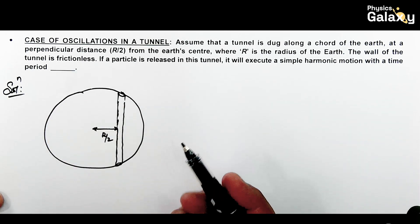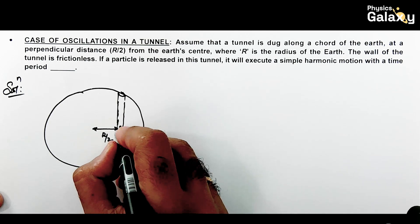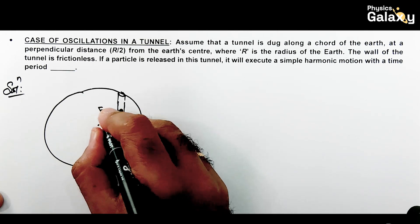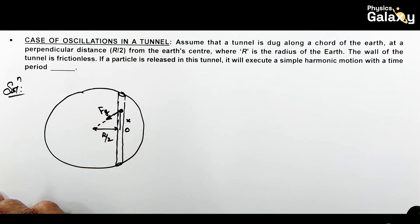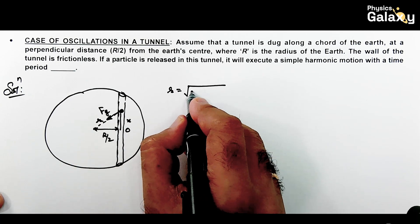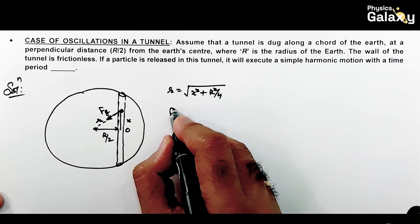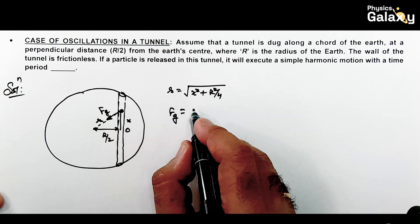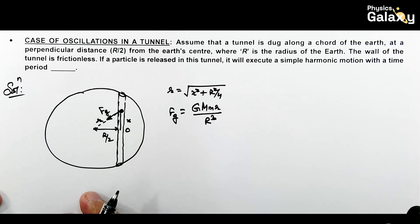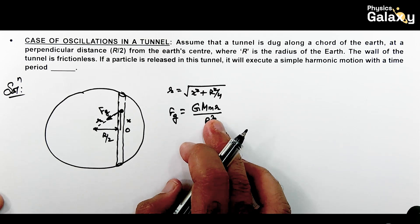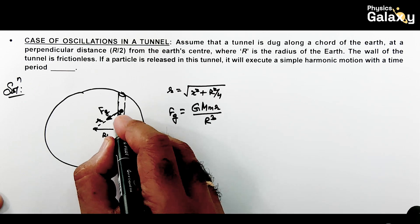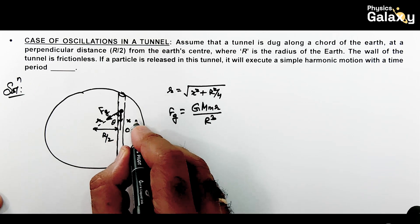The wall of the tunnel is frictionless and a particle released in this tunnel will execute SHM. We need to find the time period. When the particle is at distance x from the mean position, gravitational force acts toward the center of Earth. This distance can be written as small r, where r = √(x² + r²/4).